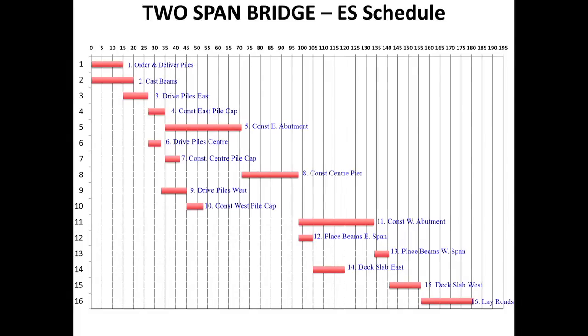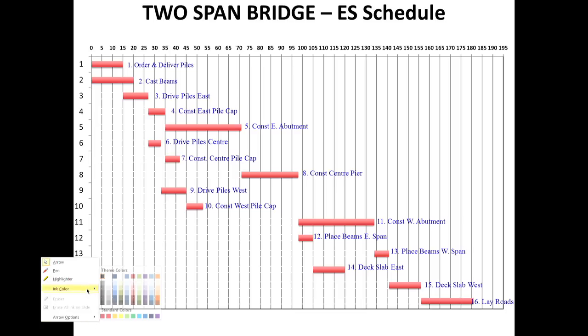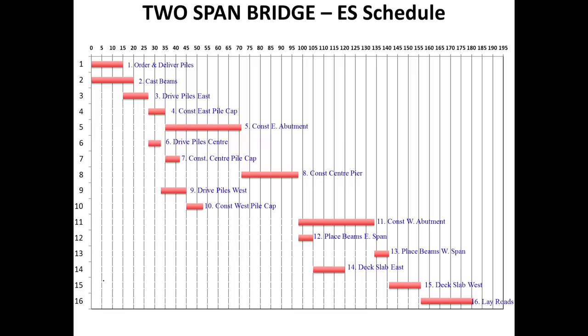Now, we are going a little bit into depth into how we get monitoring data. I'm going back to the two-span bridge example which you are all familiar with. I think it was lecture 8 where we went into calculating the duration of the various activities of this bridge. I have taken those durations and put them in a bar chart here, showing the various activities and the early start schedule.